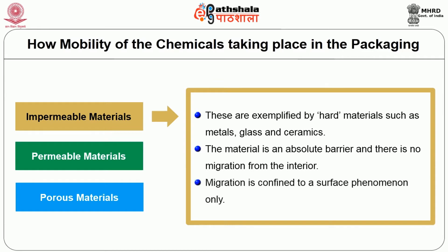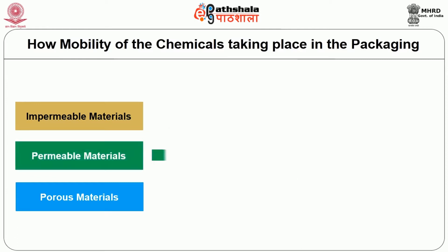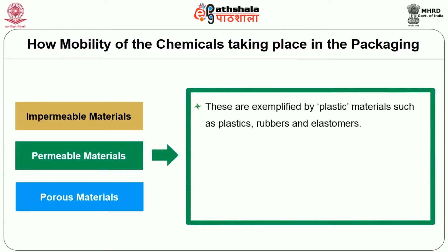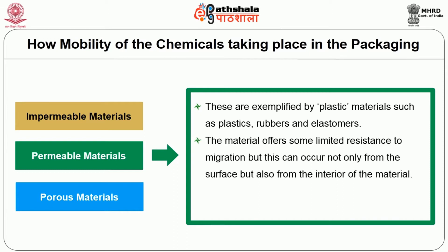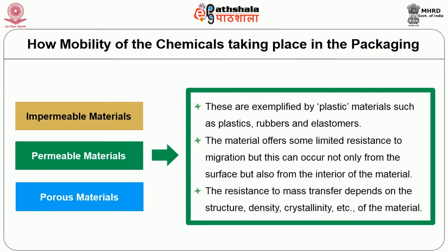Next is permeable materials. These are exemplified by plastic materials such as plastics, rubbers and elastomers. The material offers some limited resistance to migration but this can occur not only from the surface but also from the interior of the material. The resistance to mass transfer depends on the structure, density, crystallinity, etc. of the material.